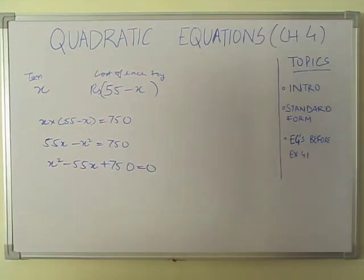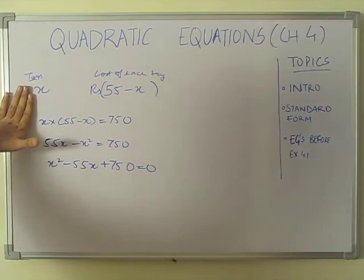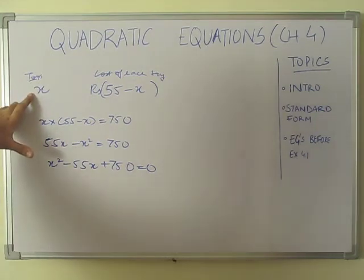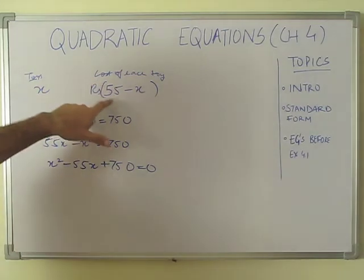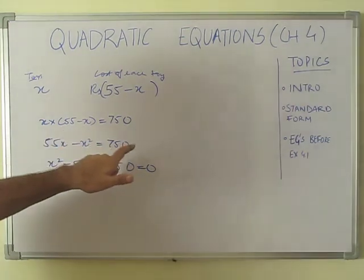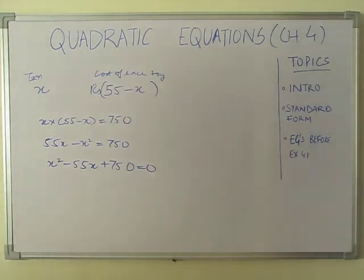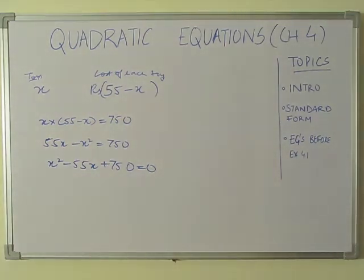Rearranging to standard form: x² minus 55x plus 750 equals 0. This is my mathematical representation. We will find the value of x in the next exercises. In this example, x toys are made, the cost of each is 55 minus x, the total cost is 750, so we multiplied and set equal to 0. For statement-based questions, take it part by part and write it down — the answer will come easily.